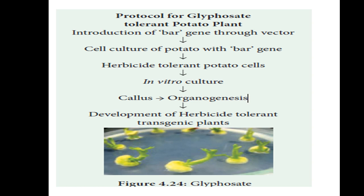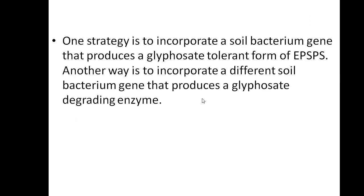In the agricultural field, we insert the BAR gene into the crops. Cell culture of potato with the BAR gene produces herbicide-tolerant potato cells. The potato plant will grow nicely. Callus meaning is an undifferentiated mass of plant cells — the initial stage where we cannot differentiate the plant. After that, true root, stem, and leaves all arise from that through organogenesis.